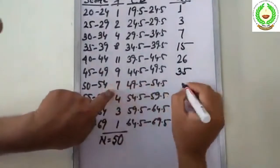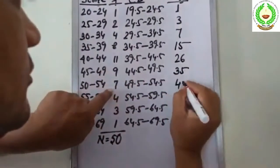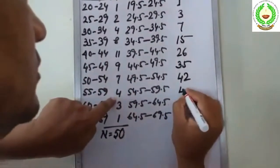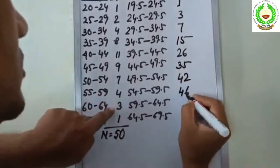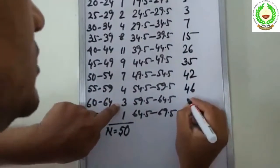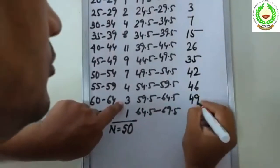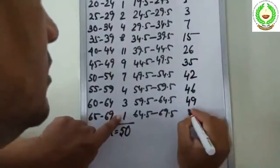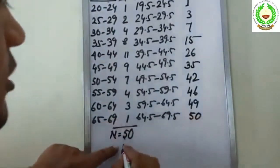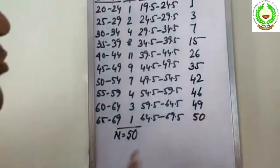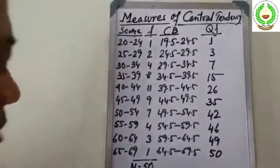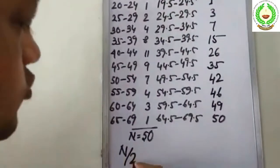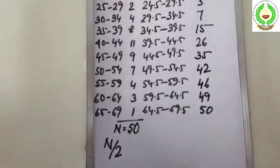The cumulative frequency values are: 25, 24, 24, 3, 49, and 50. The total cumulative frequency is 50.